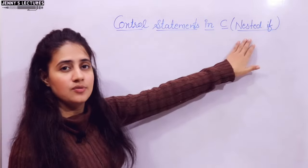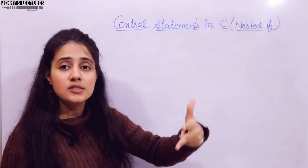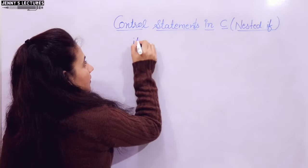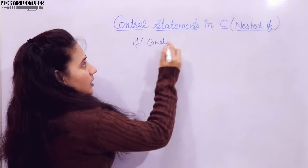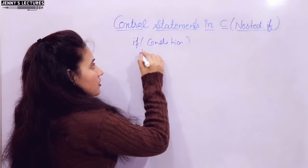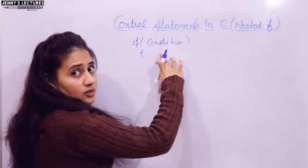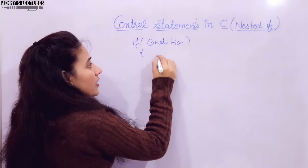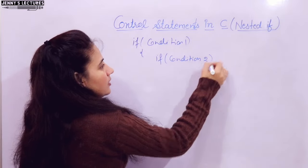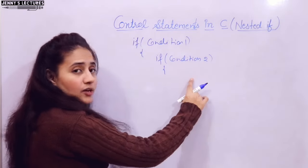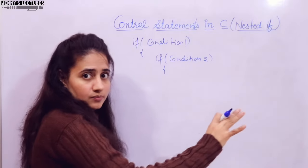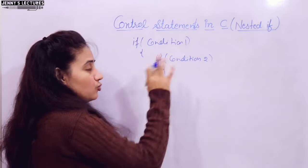So let's discuss nested if. Nesting of if means within one if, we can use another if. There is one outer if with some condition. If that condition is true, control goes into that if block, and within it we can write another if — with condition 2, condition 3, condition 4, and so on up to n conditions.